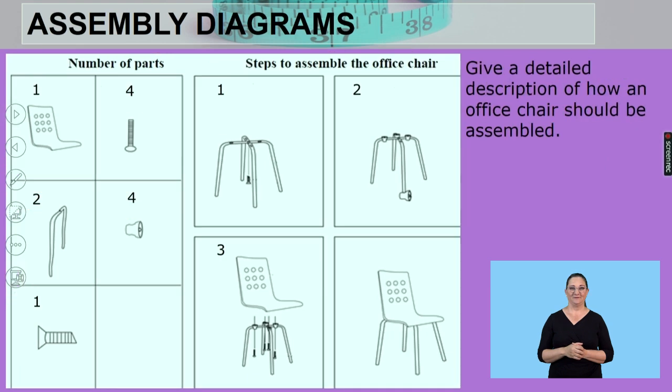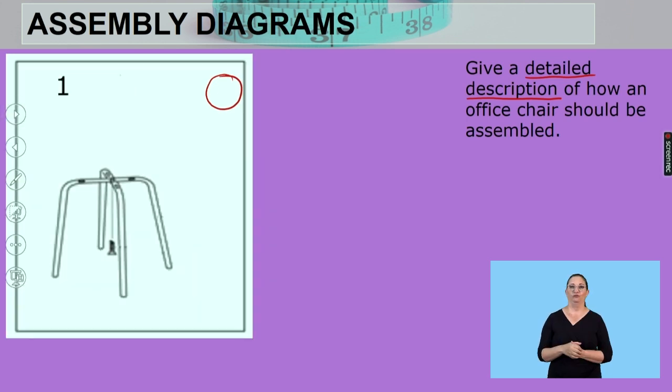So let's move along. Give a detailed description of how an office chair should be assembled. Now in this case, we've got to start at step one and continue the process until the chair is assembled. Very last step. So let's see what we've got to do first.